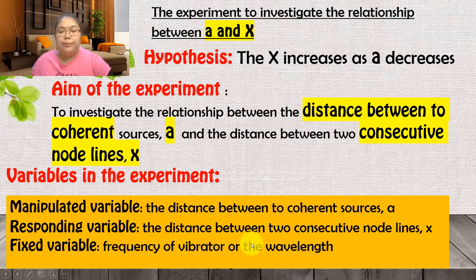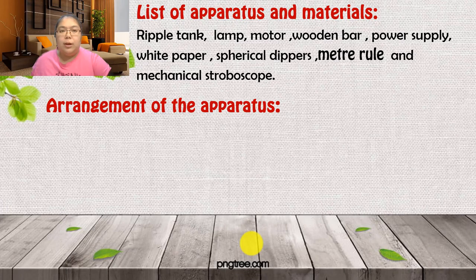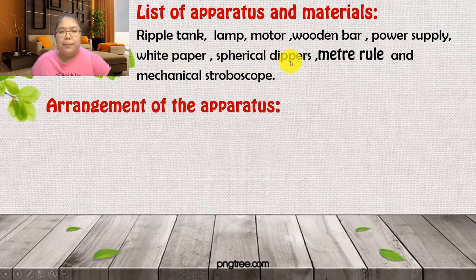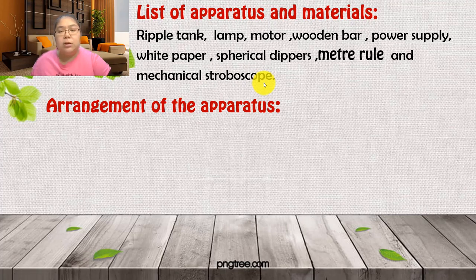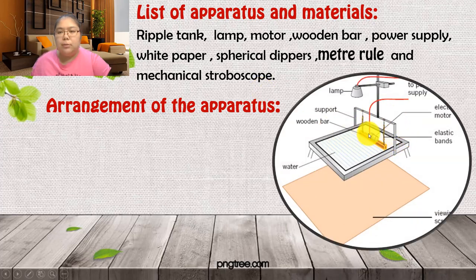The constant variable is the frequency of the vibrator, or equivalently the wavelength. If you're using a ripple tank, the frequency must remain the same. The apparatus includes: ripple tank, lamp, motor, wooden bar, power supply, white paper, spherical dipper, meter rule, and stroboscope. The stroboscope is very important as it freezes the motion.